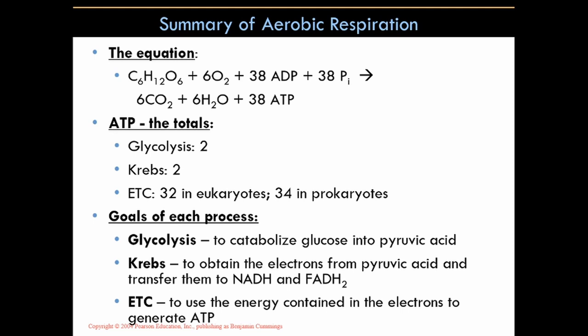Every turn of the Krebs cycle you get one ATP, but that's only for one pyruvate — half a glucose. Two pyruvates equals one glucose molecule, so for every glucose you get two ATPs. In the ETC, eukaryotic cells will produce approximately 32–34 ATPs, and prokaryotes produce a few more than eukaryotes.